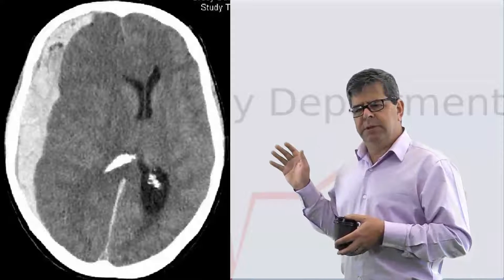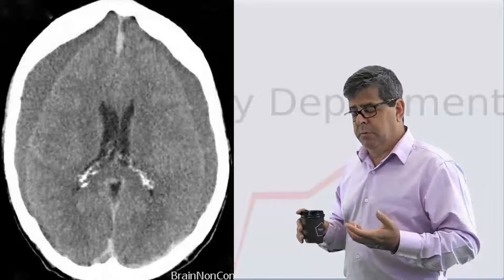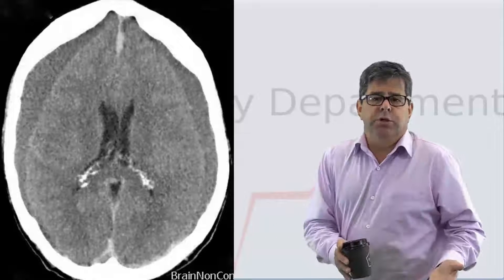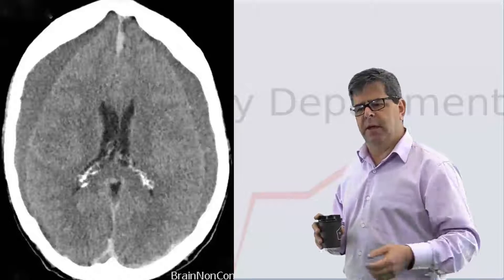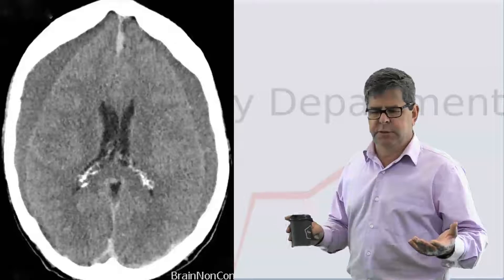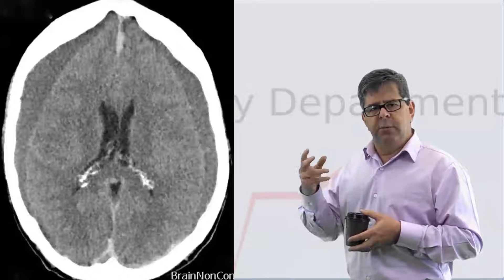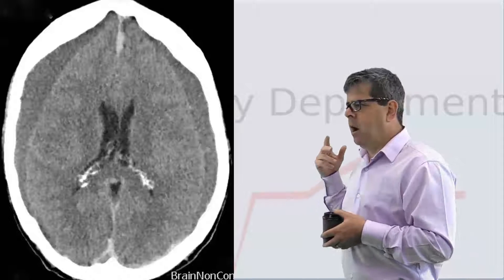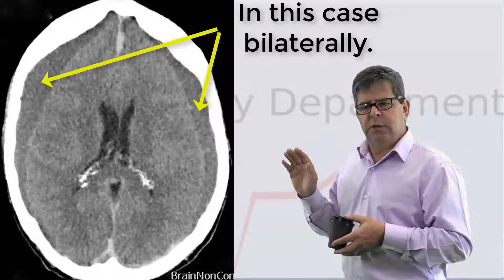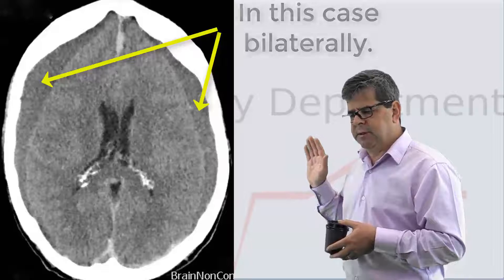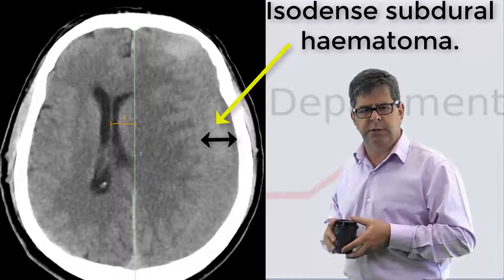Sometimes a patient might present a bit later with a subdural — they might be on anticoagulants and fall in a nursing home. They may present a week or somewhat later with signs of decreased level of consciousness or weakness on one side. By then the blood has started to break down, giving this isodense appearance, which can be quite difficult to see. So you need to look for the effects of that isodense subdural pushing against the surrounding cerebral tissue.